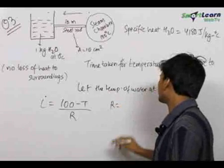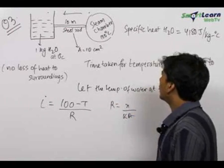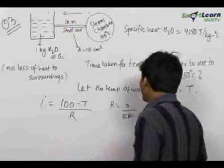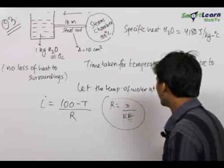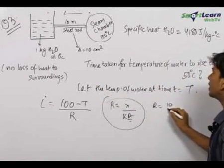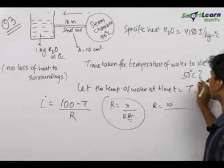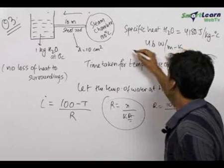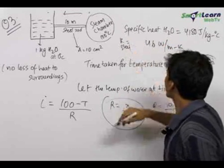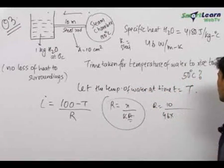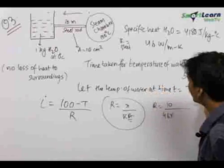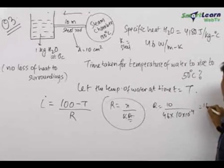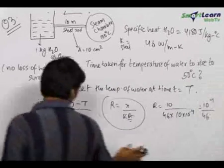The thermal resistance of the rod can be written as L/(k·A), where L is the length along the direction of current flow. Since both the length and area of cross section are fixed, we can directly calculate R. The length is 10, thermal conductivity of steel k = 46 W/mK. The area of cross section perpendicular to the current is 10 cm² = 10 × 10⁻⁴ m². Therefore R = 10⁴/46.